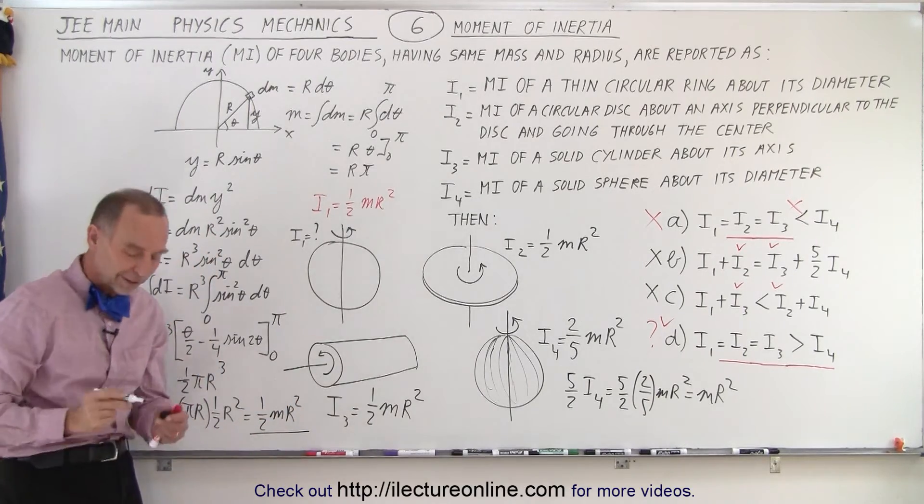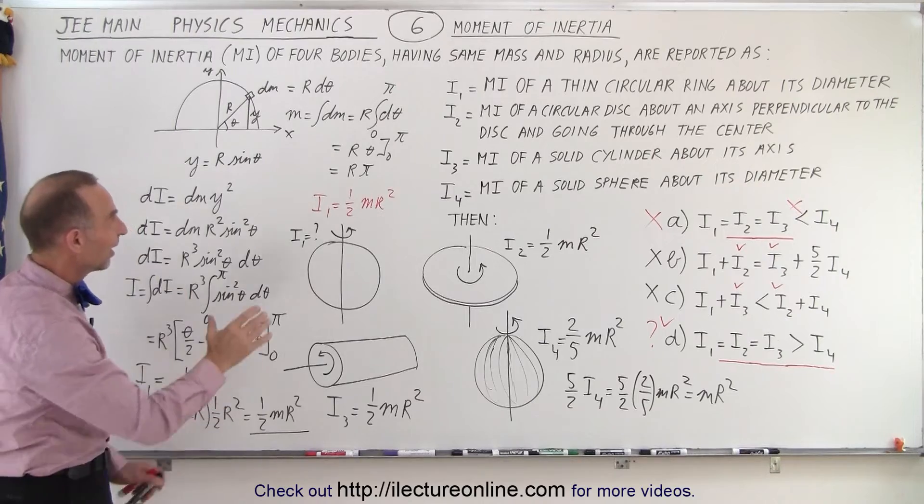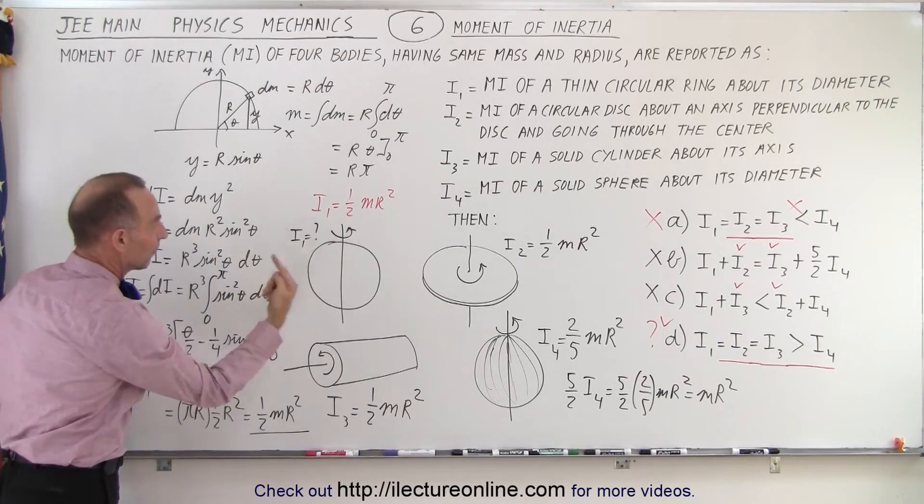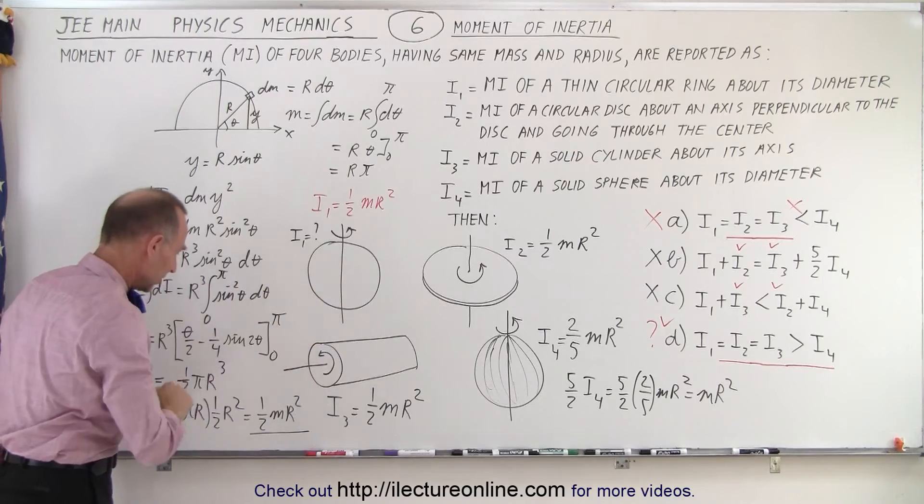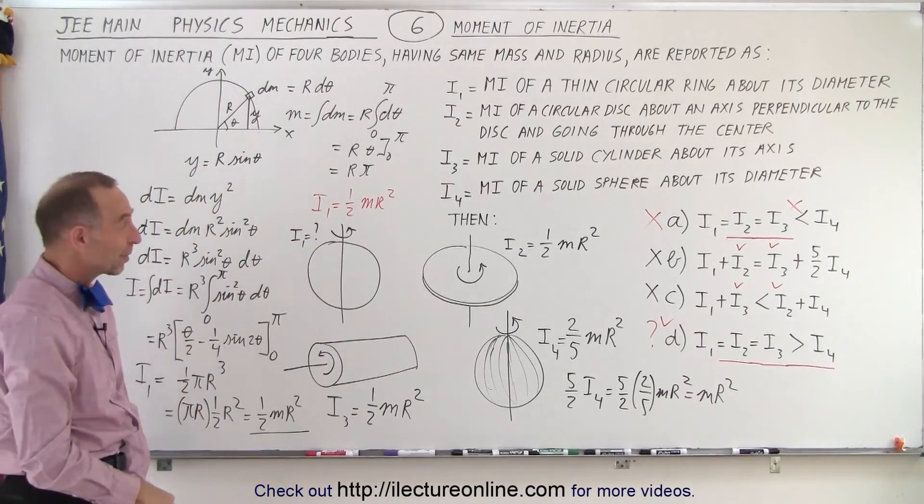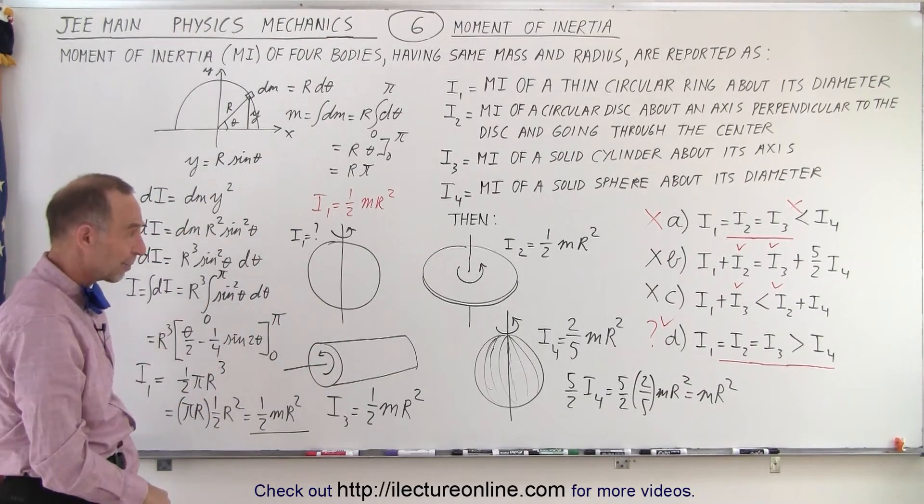And notice, sure enough, the moment of inertia of a thin circular ring rotating about its diameter is actually equal to one half m r squared, which is what we had to surmise.